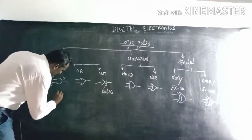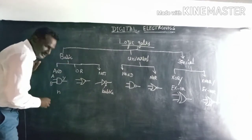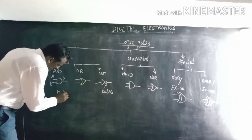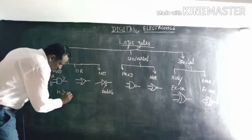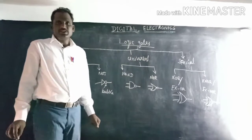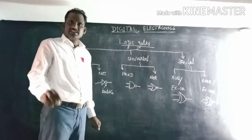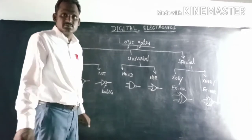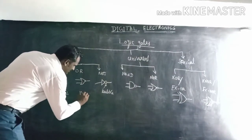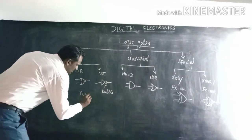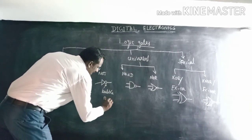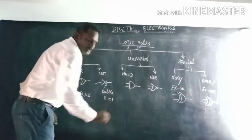Let N be the number of inputs. N can be greater than or equal to 2 — it is not necessary to have only two inputs; it can be 3, 4, and so on. However, in the inverter (NOT gate), N is strictly equal to 1.